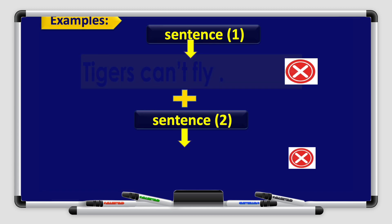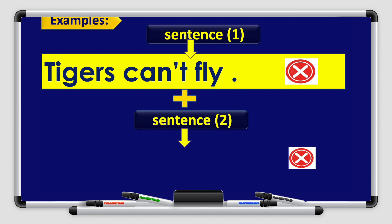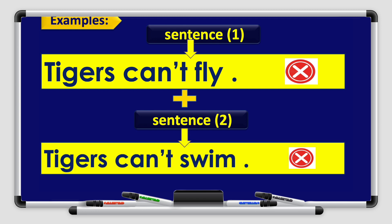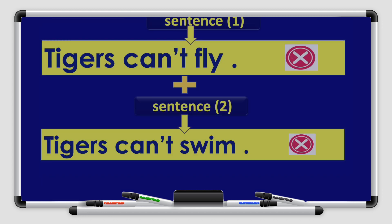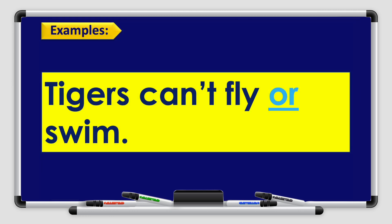Another example. Sentence 1 in negative: Tigers can't fly. Sentence 2 in negative: Tigers can't swim. Both sentences are in negative form. I would like to join them using the conjunction 'or'. Result: Tigers can't fly or swim.